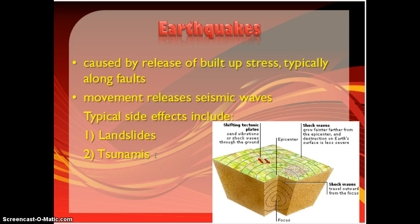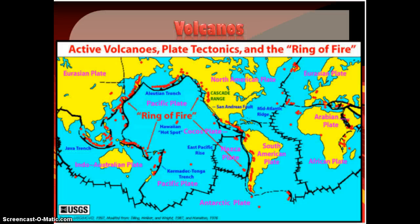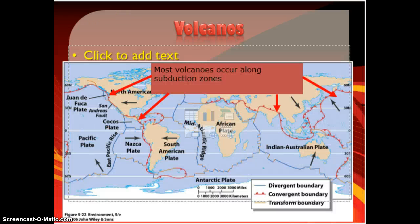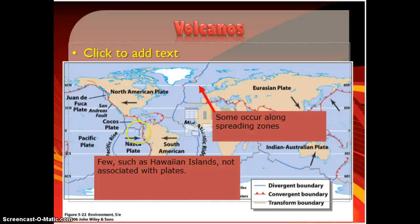Tsunamis are big waves caused by underwater earthquakes that can cause a lot of damage. We also see a major pattern of volcanoes popping up around these plates. Most volcanoes occur along those subduction zones, where one plate is diving under the other one, but some occur along the Mid-Atlantic Ridge and other spreading zones as well.